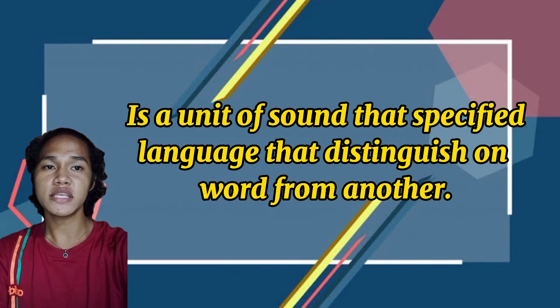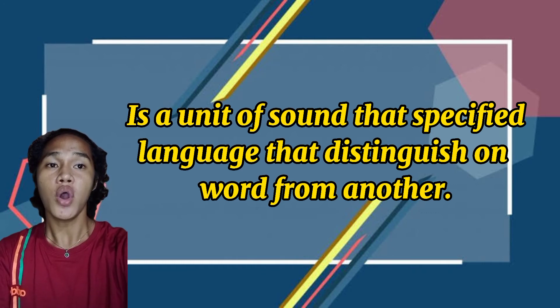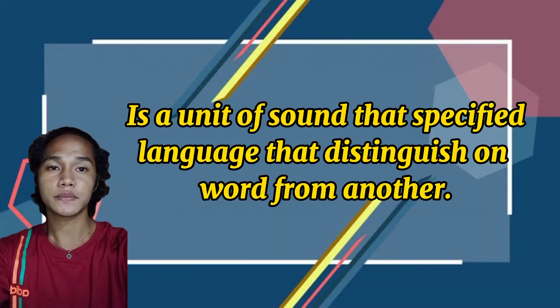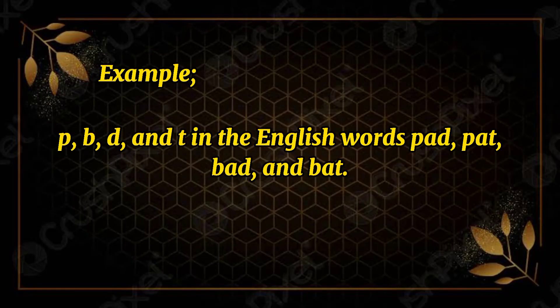What are phonemes? A phoneme is a unit of sound in a specified language that distinguishes one word from another. For example, the sounds P, B, D, and T in the English words pad, pat, bad, and bat. These are the smallest units of sound in a language.